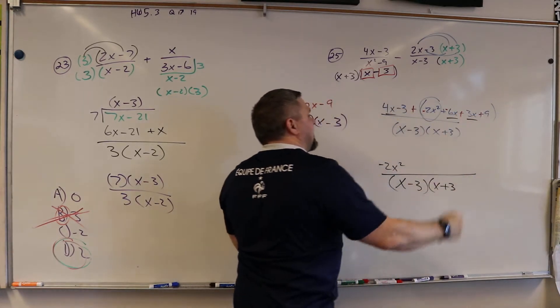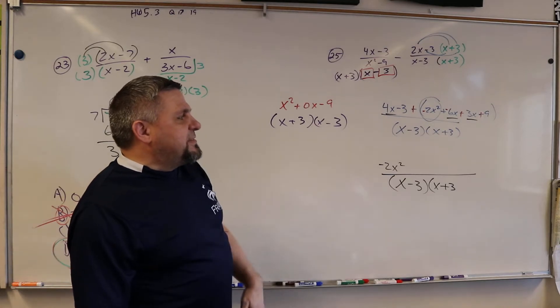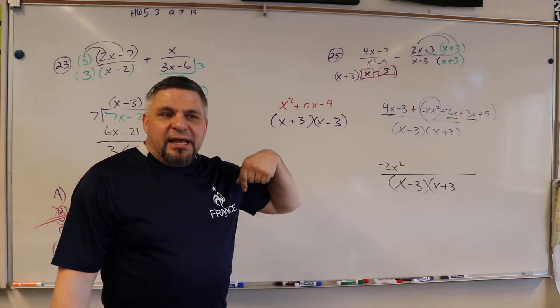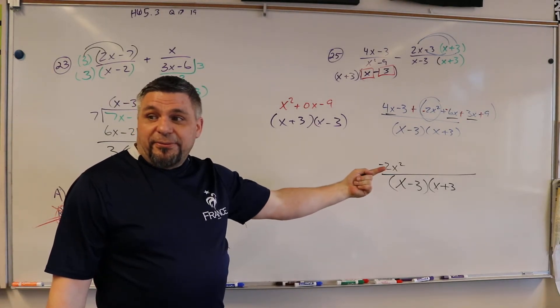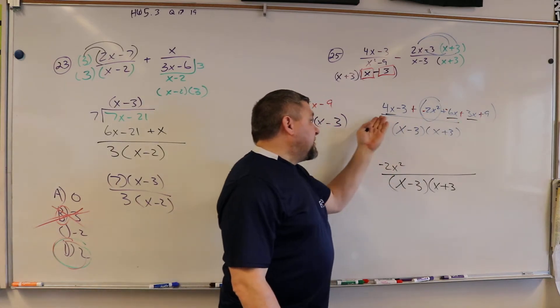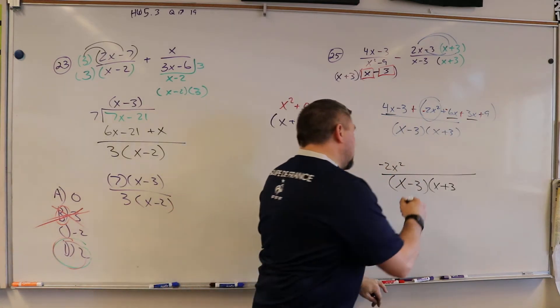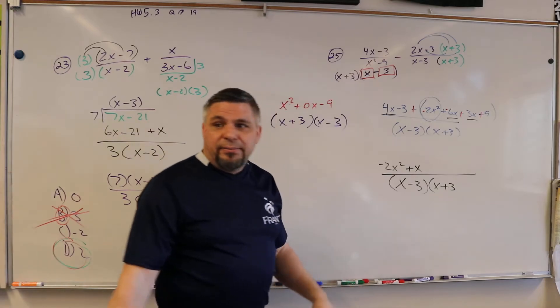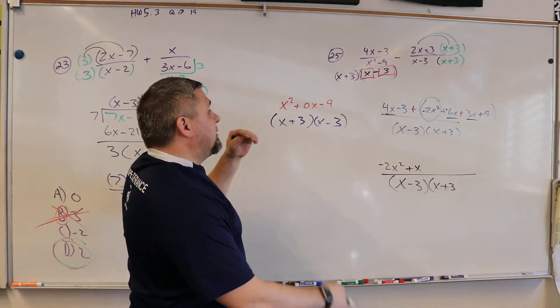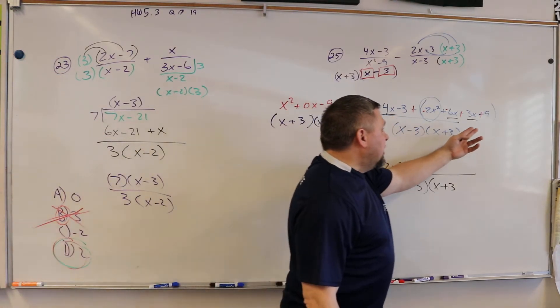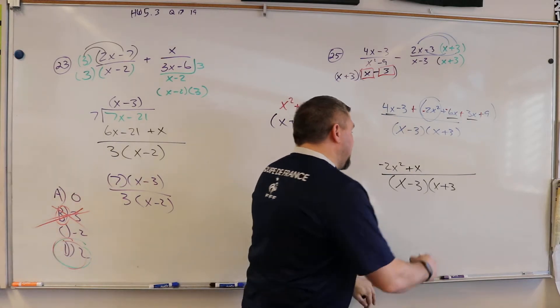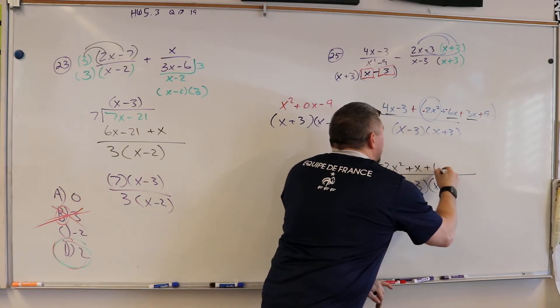Now, collect all your x's. That's this guy, that's this guy, that's this guy. So we've got negative 6 and positive 3, that's negative 3. Negative 3 plus 4, that's 1. So that's plus x, right? And then we're going to take negative 3 plus 9, and that would be plus 6, right?